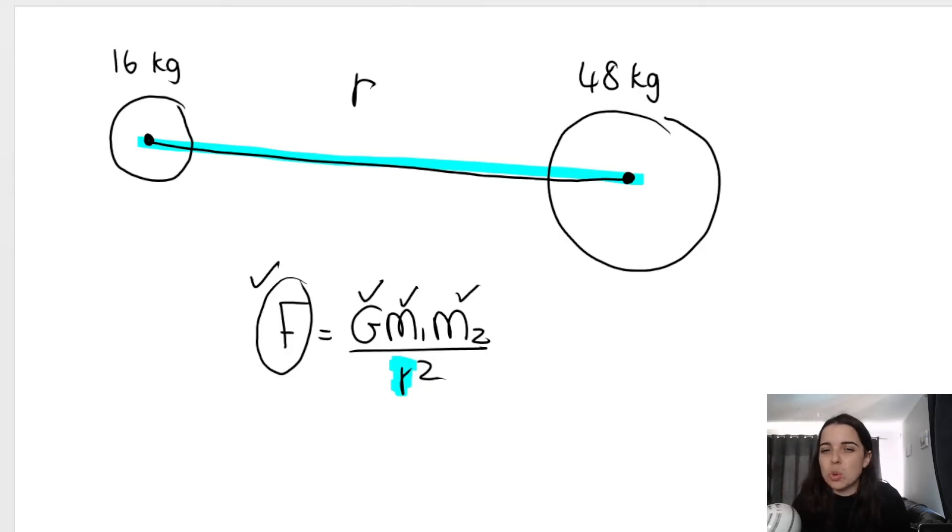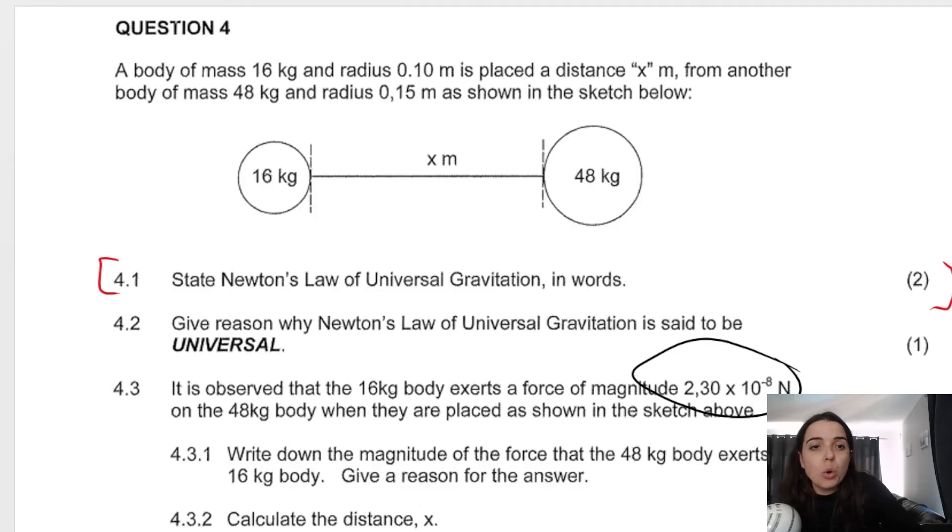But the question doesn't want R if you think about it. The question doesn't want the distance from the center of this object to the center of the other. No, it only wants from here to here. It wants X. So how would we get X?